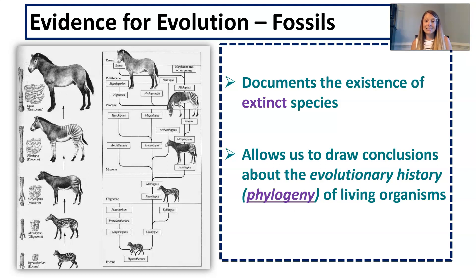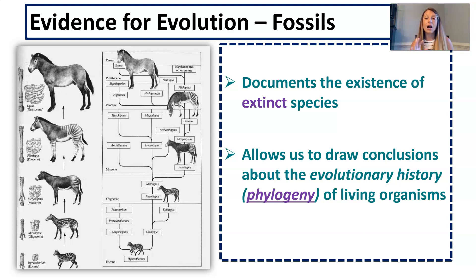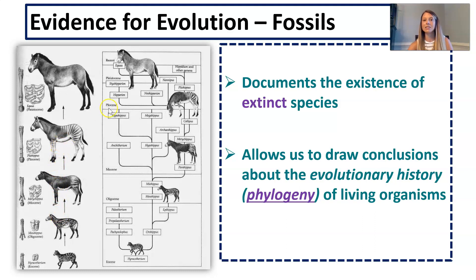Fossil evidence allows us to document the existence of species that no longer exist, and therefore allows us to draw conclusions about the evolutionary history — or phylogeny — of organisms still alive today. We have modern horses today, and we have fossils found in different sediment layers. This animal did not simply become that animal; through natural selection there was an accumulation of traits, with intermediate species that led to what we have today, allowing us to draw conclusions about the phylogeny of the horse.